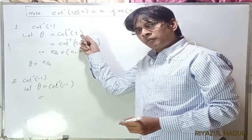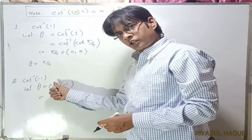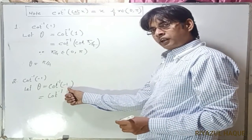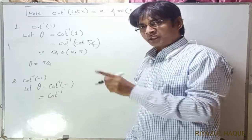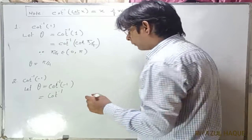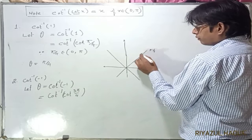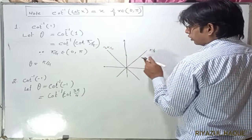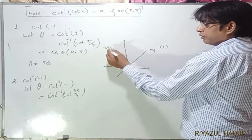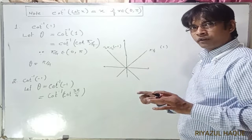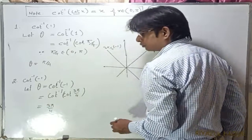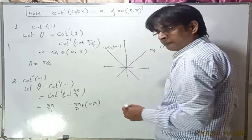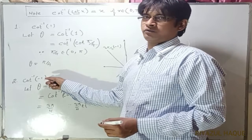Next example: cot⁻¹(-1). Let θ = cot⁻¹(-1). Using the same approach as the previous example, we apply the cot inverse function. Since cot(3π/4) = -1 — because in the second quadrant the cot value is negative — and 3π/4 belongs to the domain (0, π) of the cot function, therefore 3π/4 is the principal value of cot⁻¹(-1).